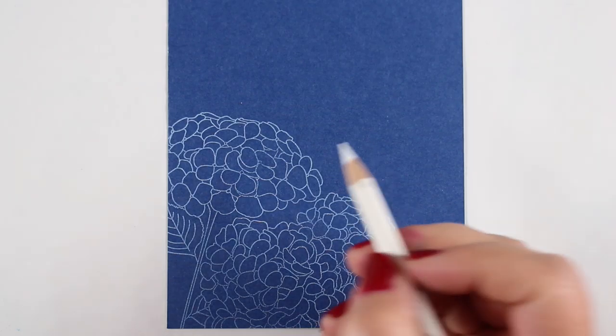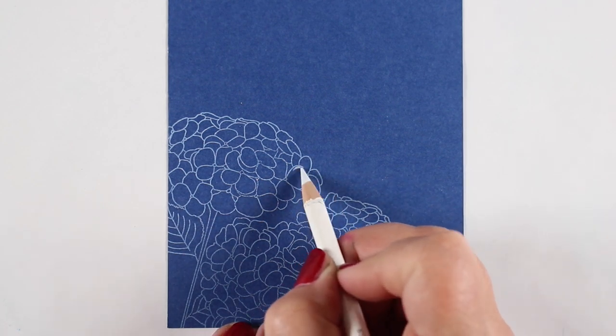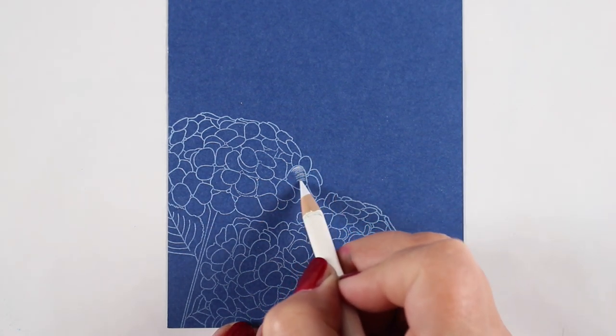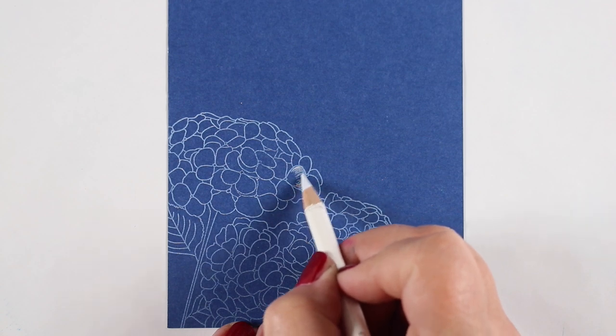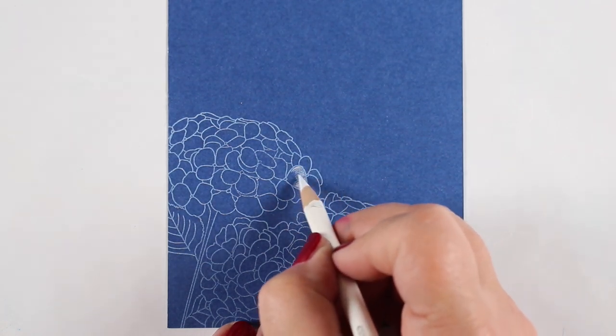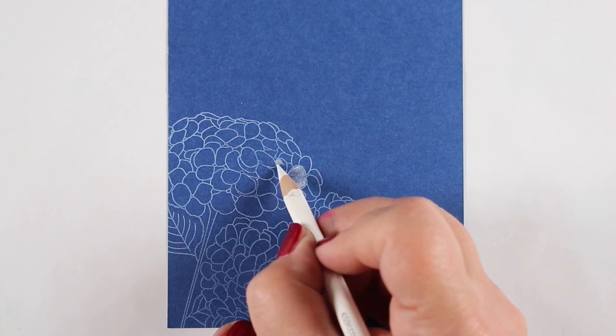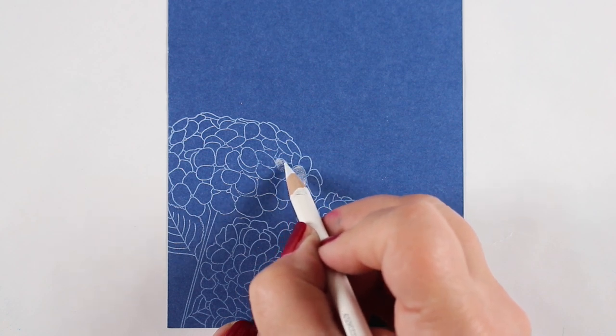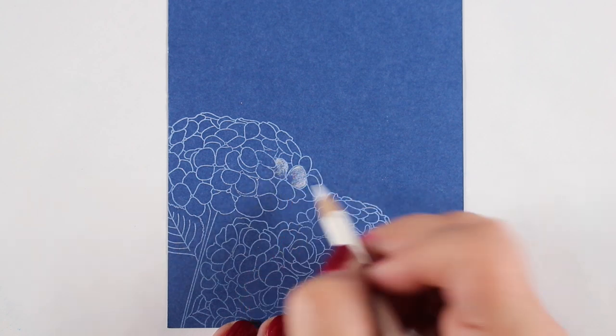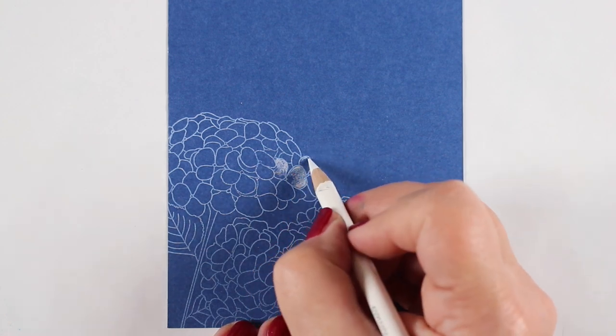The first of the two is a stamp by My Favorite Things from their last release. I stamped it onto dark blue cardstock using white ink, Lawn Fawn's Yeti white ink, which is a pigment ink, so I let it dry before I started messing with it.